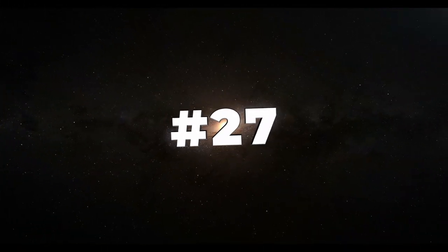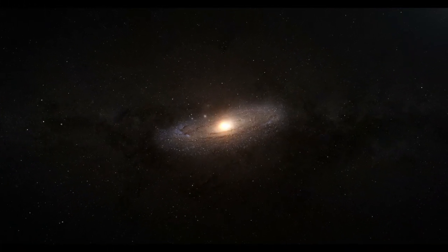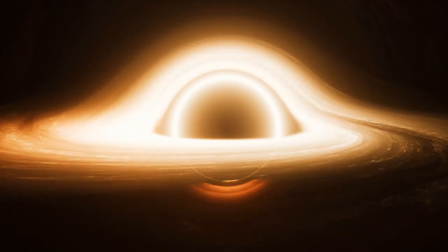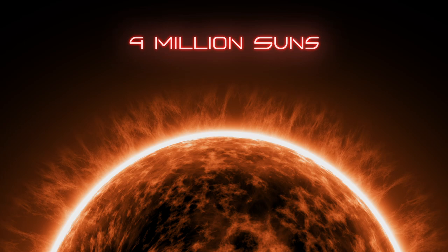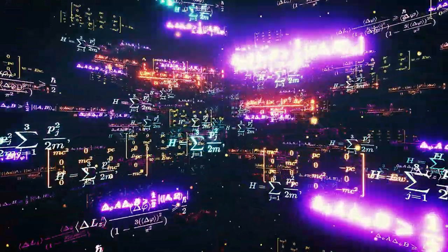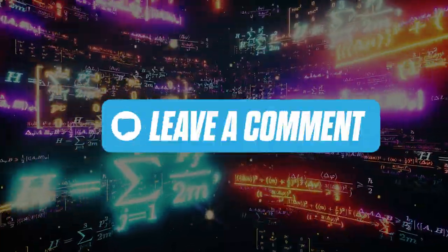Number 27. The center of the Milky Way galaxy contains a supermassive black hole called Sagittarius A, which has a mass equivalent to about 4 million suns. Based on the calculations in Fact Number 6, can you estimate how many Earths that is? Tell us in the comments.